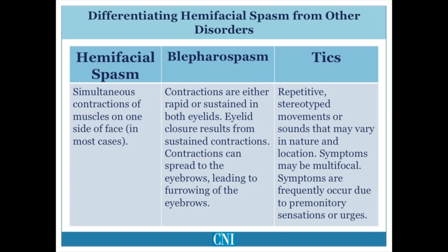Another movement disorder that is difficult to differentiate from hemifacial spasm is blepharospasm. Blepharospasm is a form of focal dystonia affecting the eyelids. Patients develop involuntary eyelid closure involving both eyes due to an abnormal motor program in the brain for control of the eyelid muscles. This is usually easily differentiated from hemifacial spasm since only the eyelids are involved, not the lower face, and both eyes are affected. The severity of eyelid closure and its effect on vision is often more severe in blepharospasm than in hemifacial spasm.